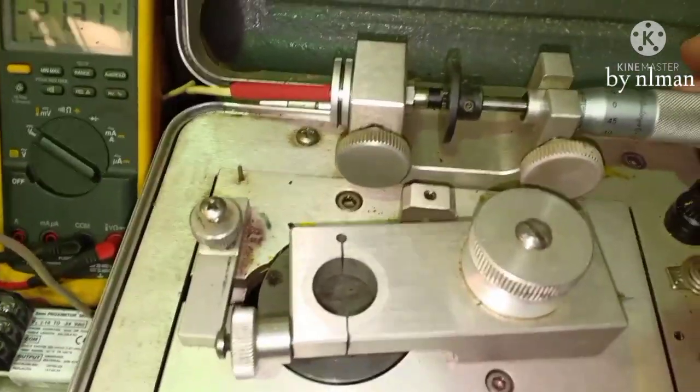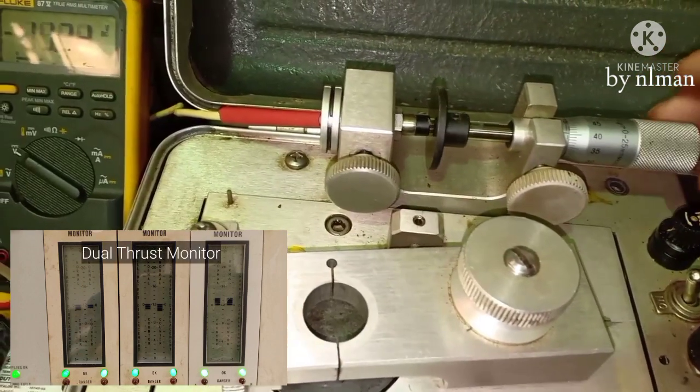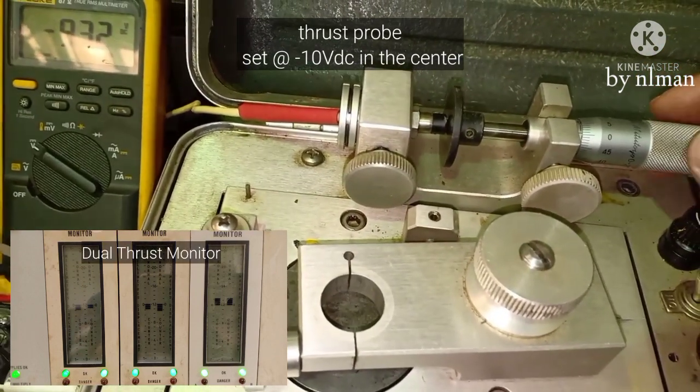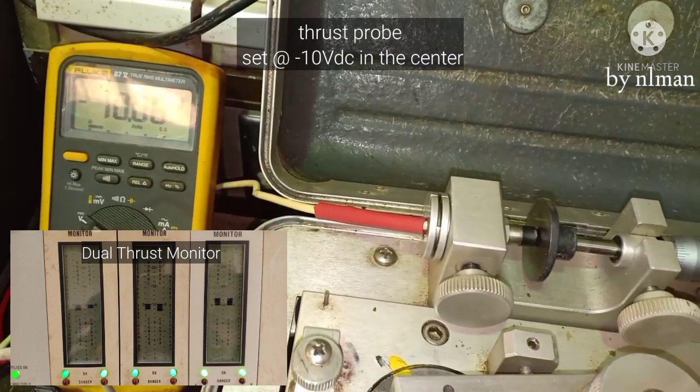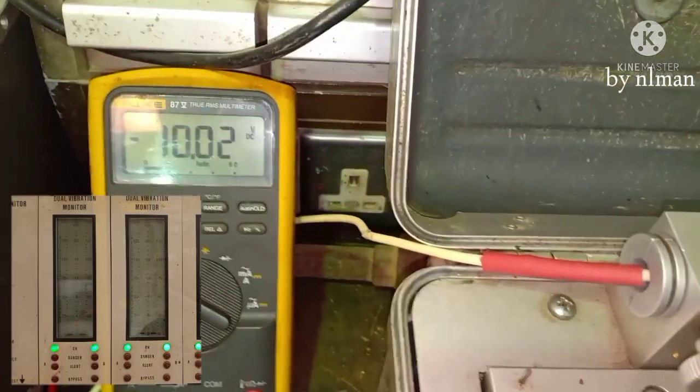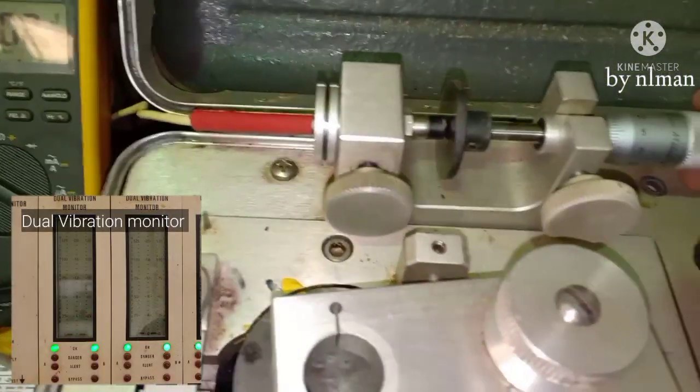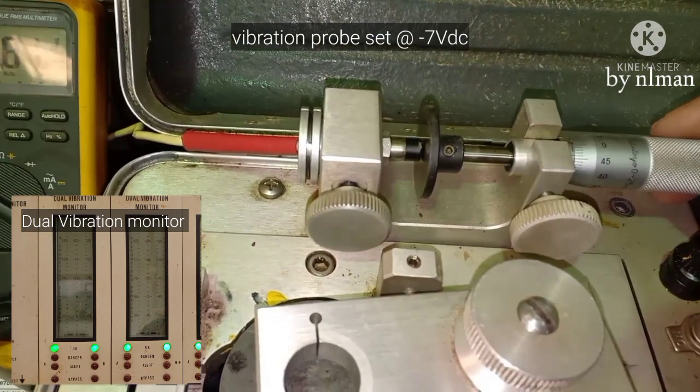So normally, for a thrust probe in the field, we set the thrust probe at 10 volts middle, in the middle, okay. So for vibration normally we set the probe at negative seven.